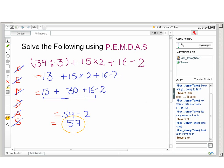Now next step is to solve the multiplication, and we will get 13 + 30 + 16 - 2. Now simply solve addition and subtraction by moving from left to right, and you will get 57 as your answer.